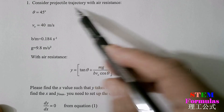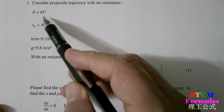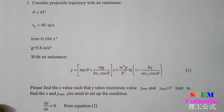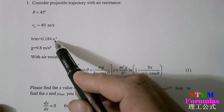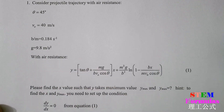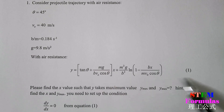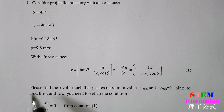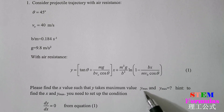Consider projectile trajectory with air resistance. The angle θ is equal to 45 degrees, v₀ is 40 meters per second, b divided by m equals 0.184 second inverse, and g equals 9.8 meters per second squared. We have learned that with air resistance, the trajectory equation is given by equation 1. Please find the x value such that y takes maximum value ymax, and find ymax.